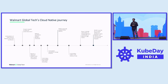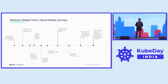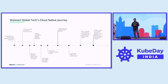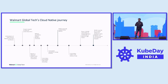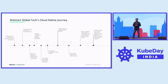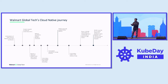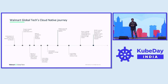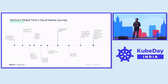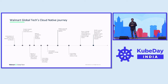Walmart began its cloud-native journey with Kubernetes clusters being adopted at Walmart stores. This is what we call our edge location. After that, our cluster footprint gradually increased and moved into the cloud as well — Walmart's private data centers as well as public clouds. After this is when we actually started designing and building our control plane, which we did over multiple phases. Right now, our platform is the go-to platform for new applications being built and developed at Walmart.